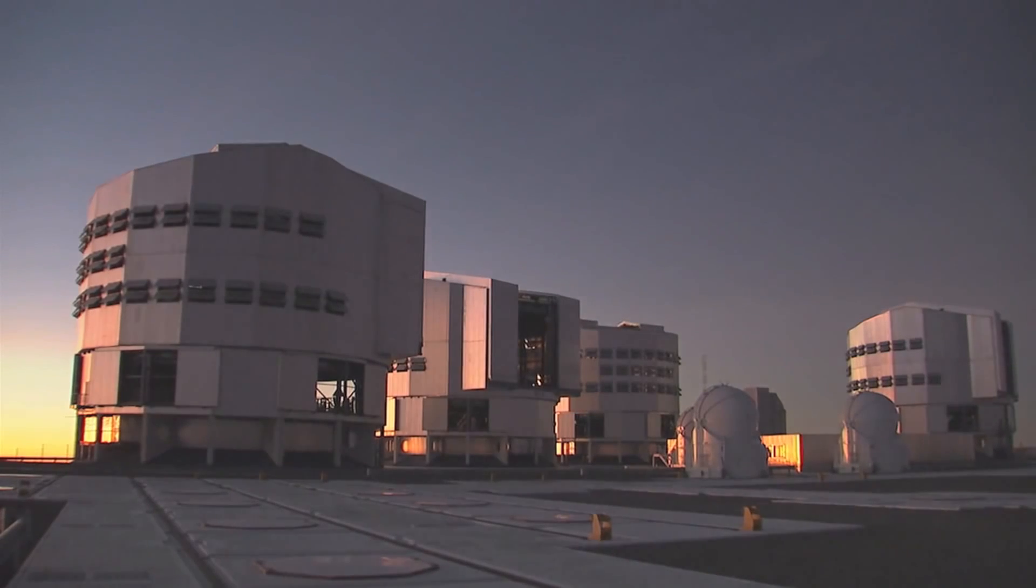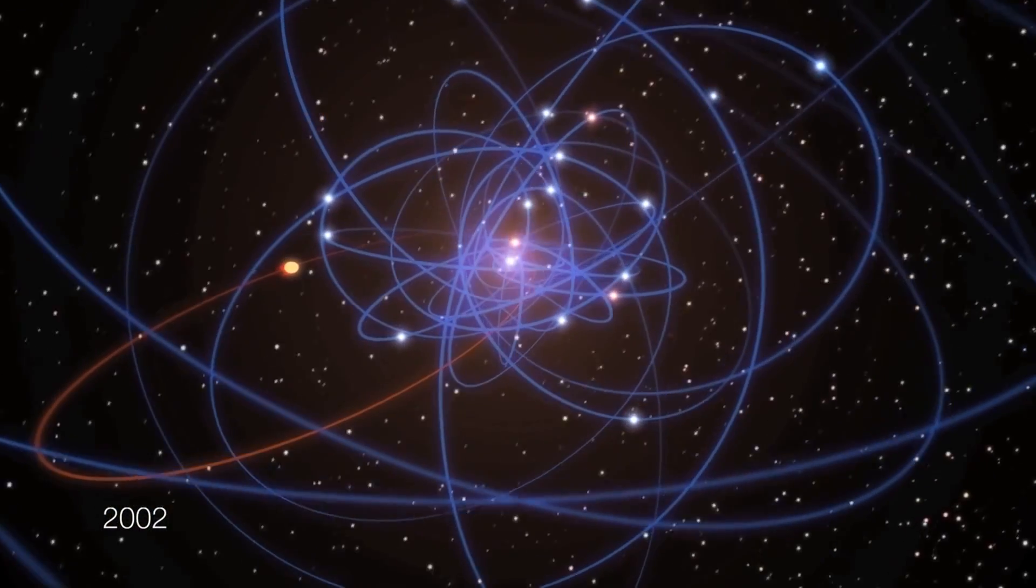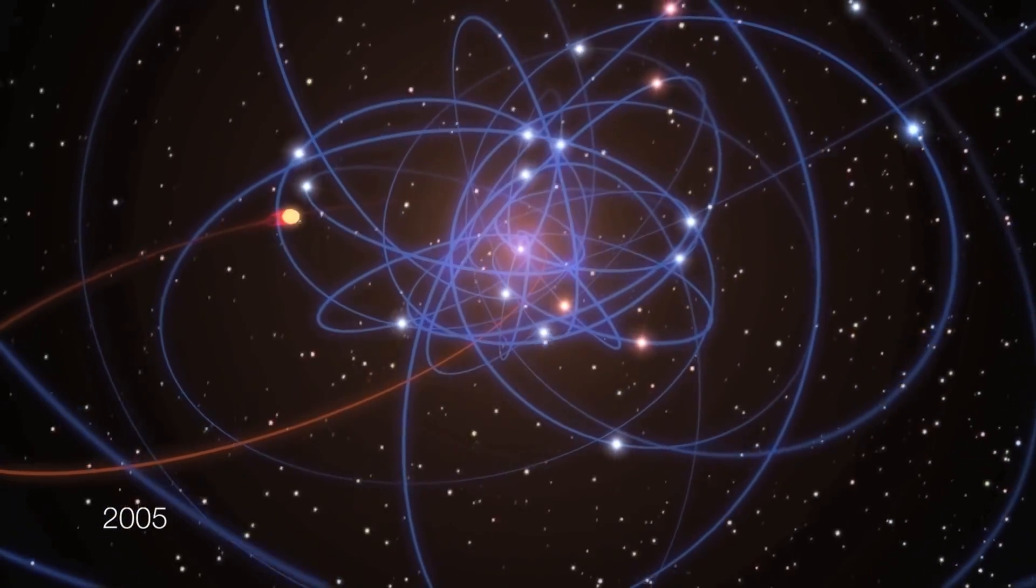Using ESO's Very Large Telescope, a team of astronomers has discovered a new object that is heading almost straight towards the black hole at vertiginous speed.